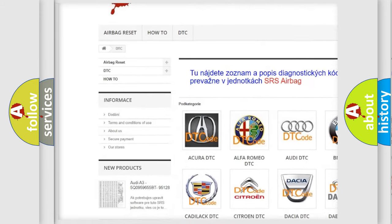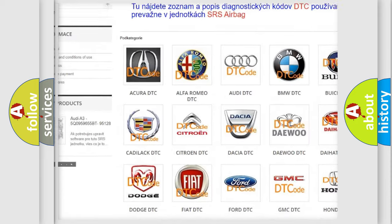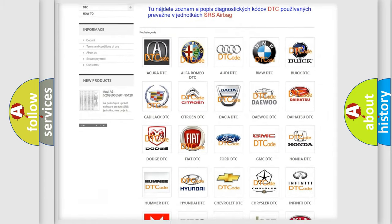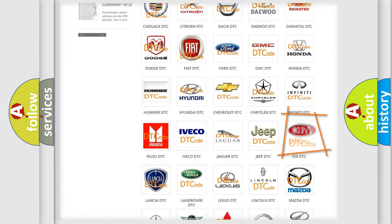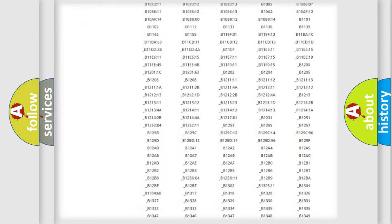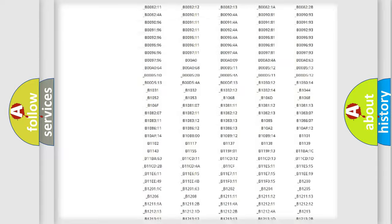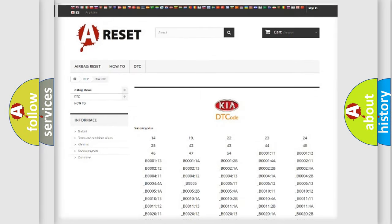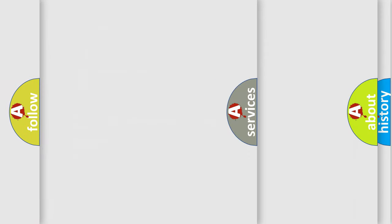Our website airbagreset.sk produces useful videos for you. You do not have to go through the OBD2 protocol anymore to know how to troubleshoot any car breakdown. You will find all the diagnostic codes that can be diagnosed in KIA vehicles, and many other useful things.